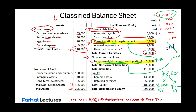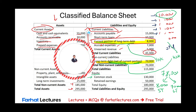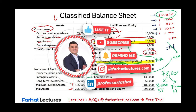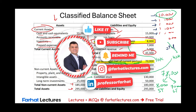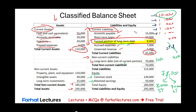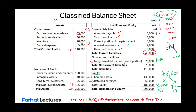Under equity, we could have common stock, paid-in capital, treasury stock (deducted from total equity because it's a negative equity item), and retained earnings. This gives us a snapshot of a classified balance sheet.